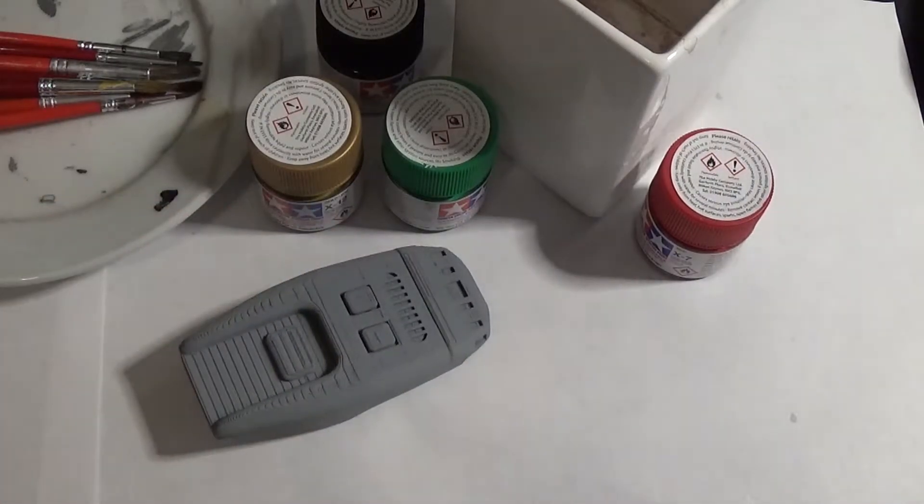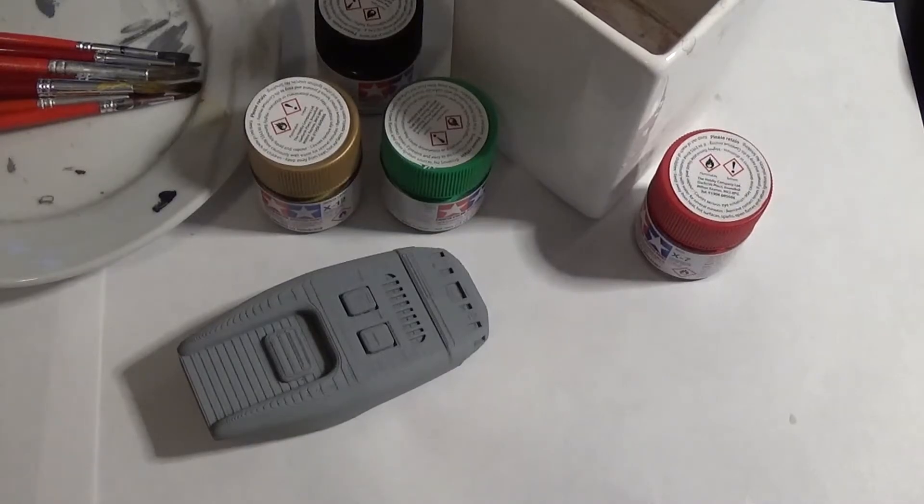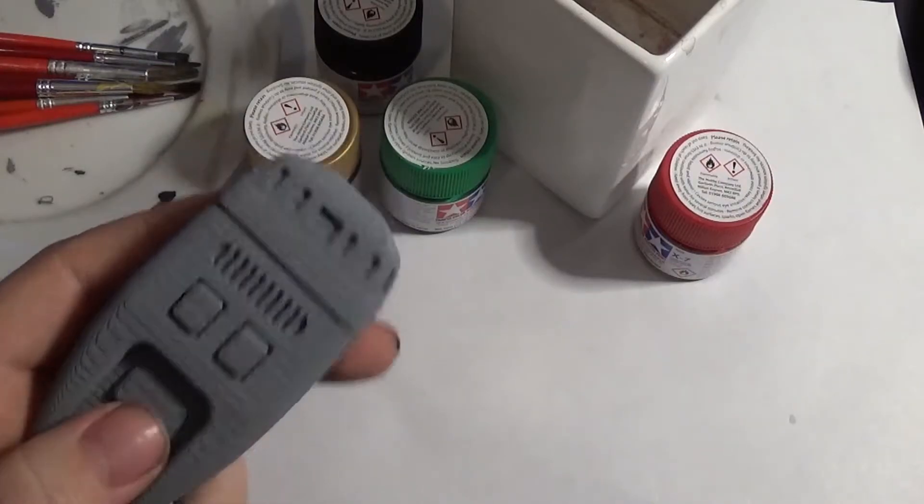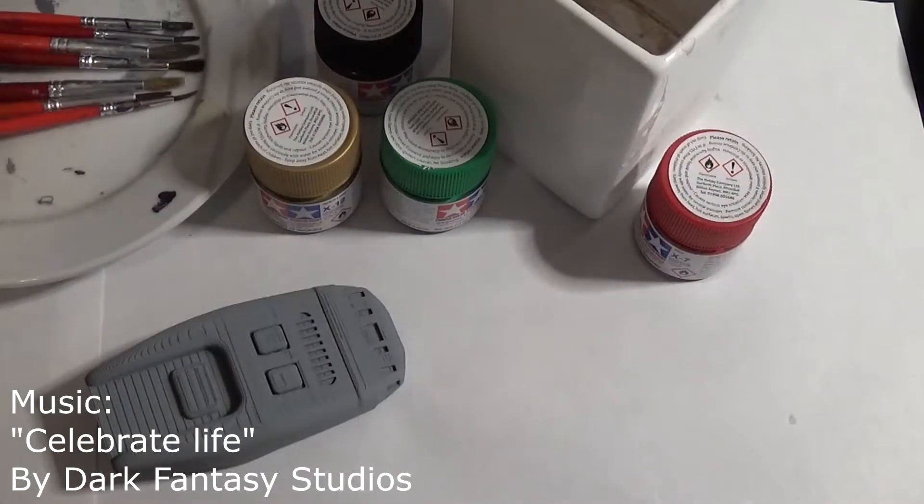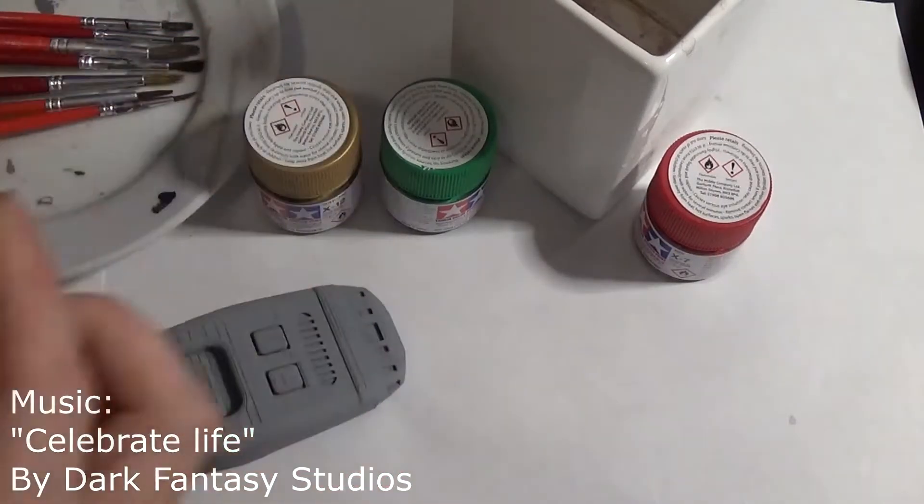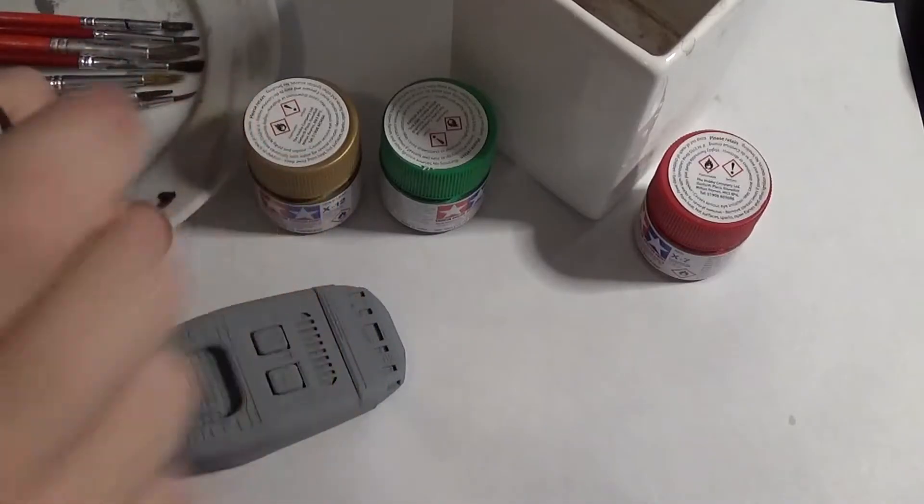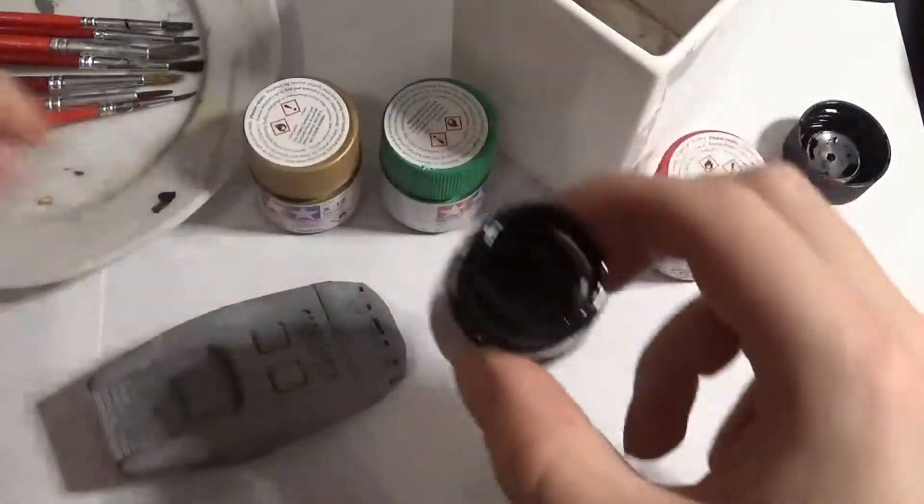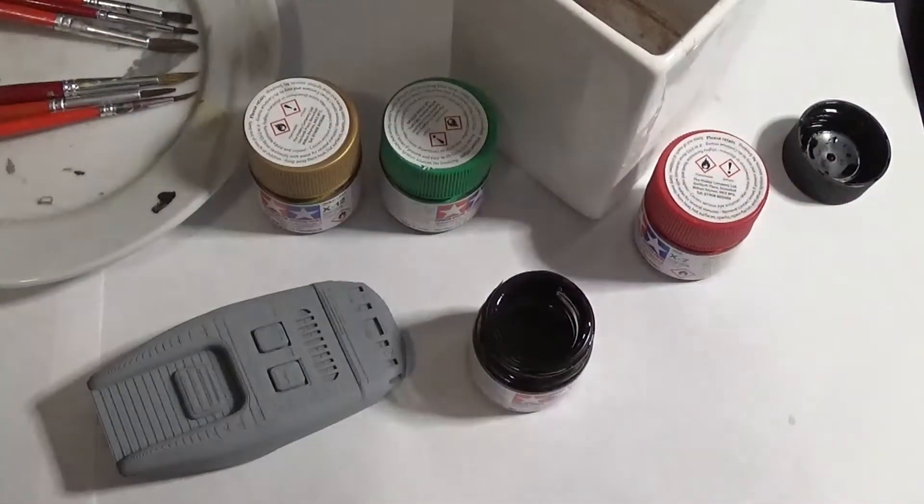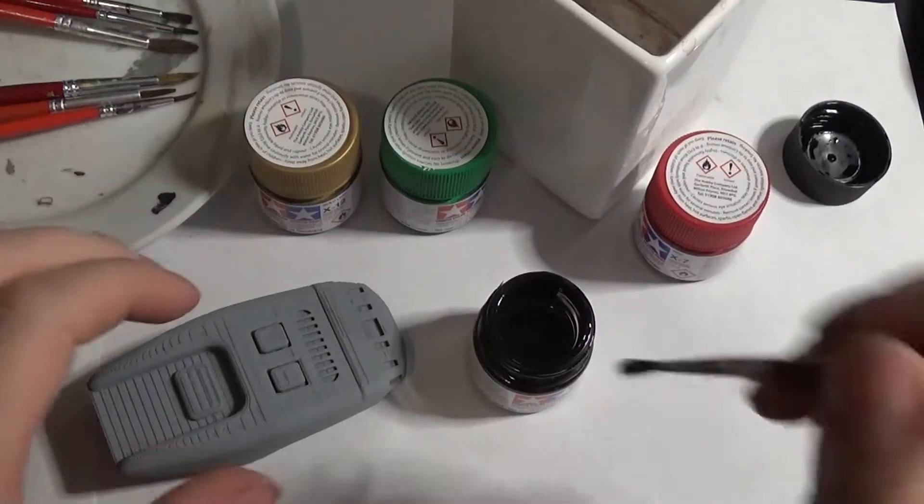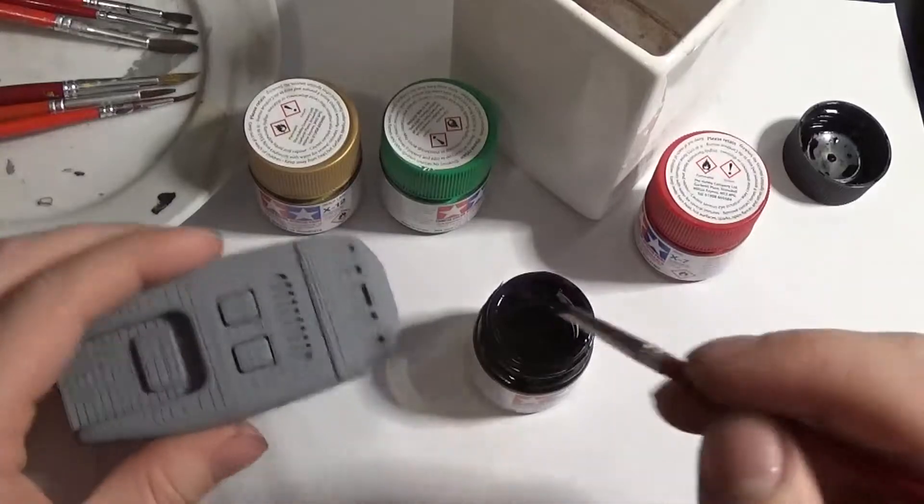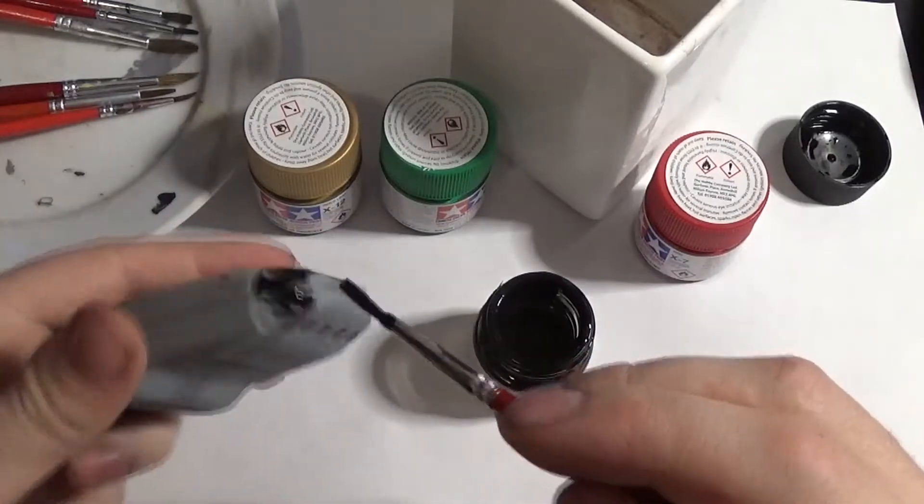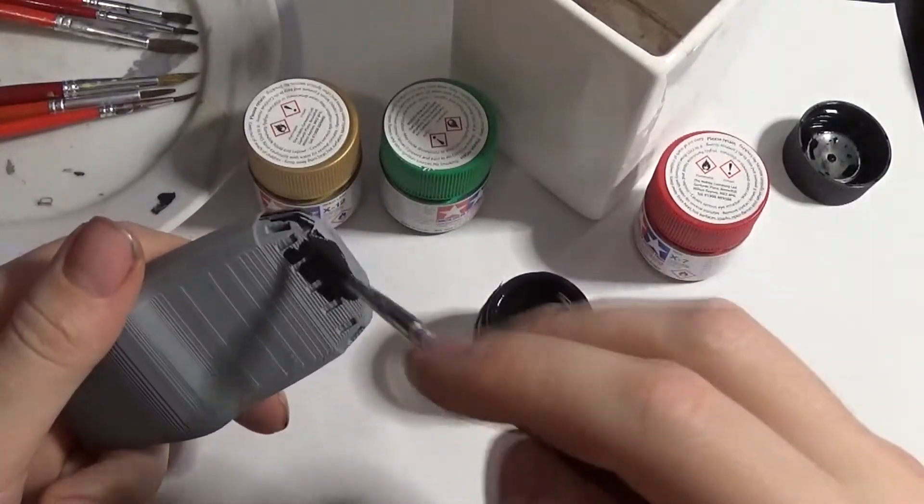Ah the phaser. So I'm going to leave the main body of it the primer grey as my tricorder and other equipment I've already painted. So first I'm going to use the X1 Black. Unscrew the lid. First time this has ever been opened. Painting around a tricorder. Not fun. Actually rather difficult, but I think I did alright.